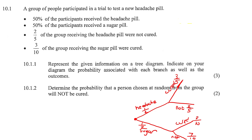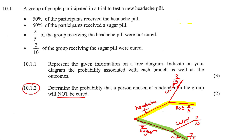Now we have all the different branches we need. The next question says: determine the probability that a person chosen at random will not be cured. There are two ways a person cannot be cured — they could take a headache pill but it doesn't work, or they take a sugar pill and that doesn't work either. To work out the total of each branch, you multiply the two numbers together.